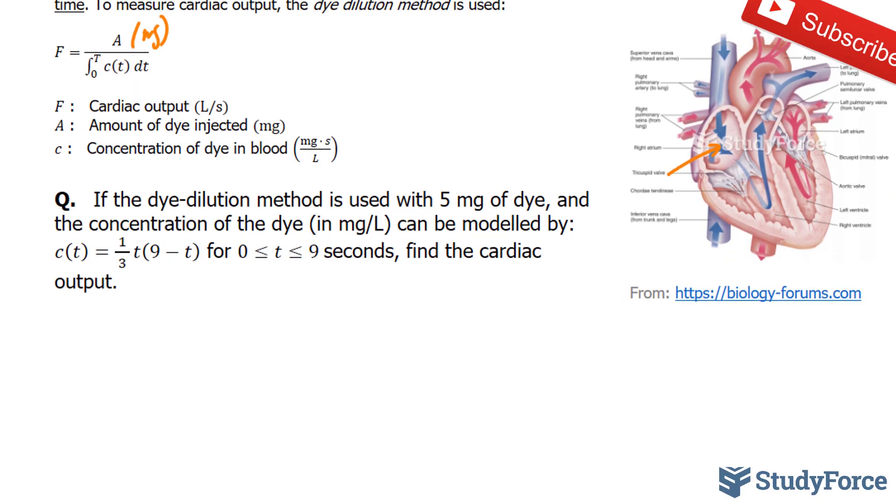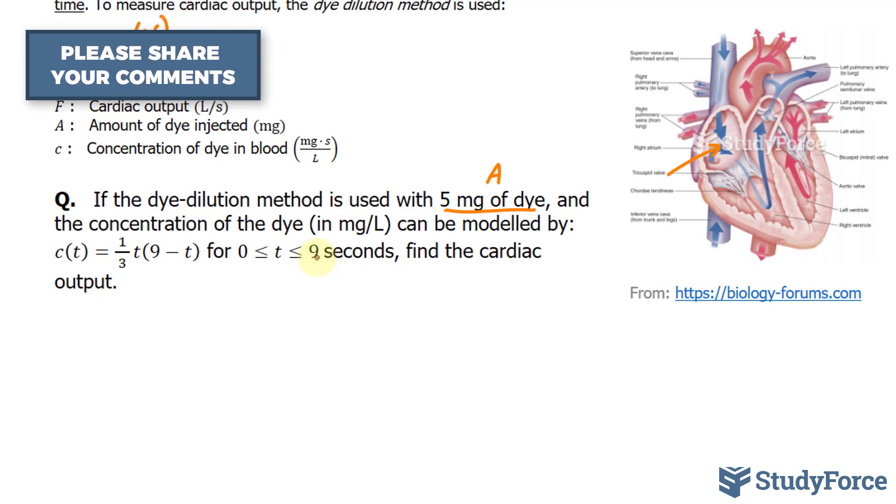The question reads, if the dye dilution method is used with 5 milligrams of dye, this is our A, and the concentration of the dye can be modeled using the function 1/3 times t times (9 minus t) between 0 and 9 seconds, find the cardiac output. This question is pretty much done for us.